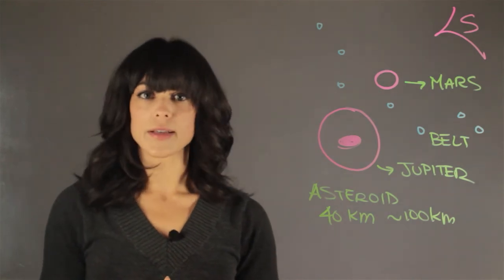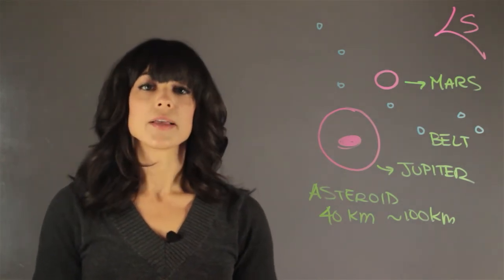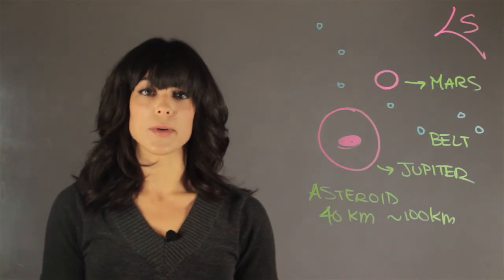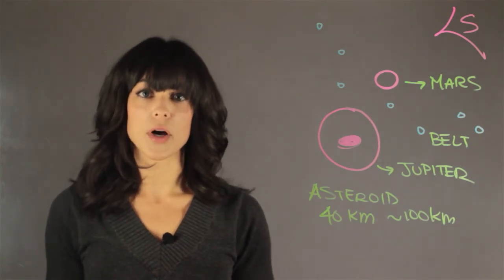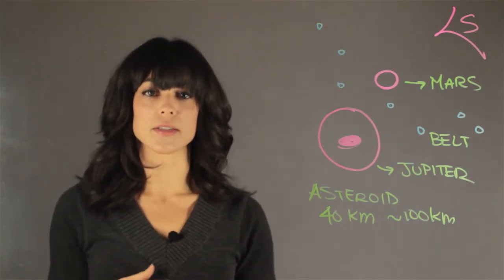And one of the key things about the asteroid belt is that there are theories that the asteroid belt used to be a planet that broke off into pieces of rocks, and this is what we call the belt.